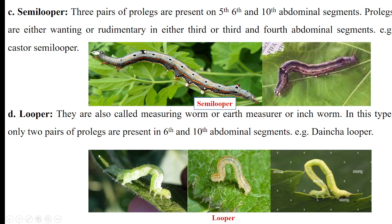Then coming to the looper — they form a bigger, larger loop, hence they are called loopers. They are also known as measuring worm, earth measurers, or inchworm. They come in the family Geometridae. They have only 5 pairs of total legs — 3 pairs of true legs on the thorax, and 2 pairs of pseudo-legs on the 6th and 10th abdominal segment. For example, Dhaincha looper.